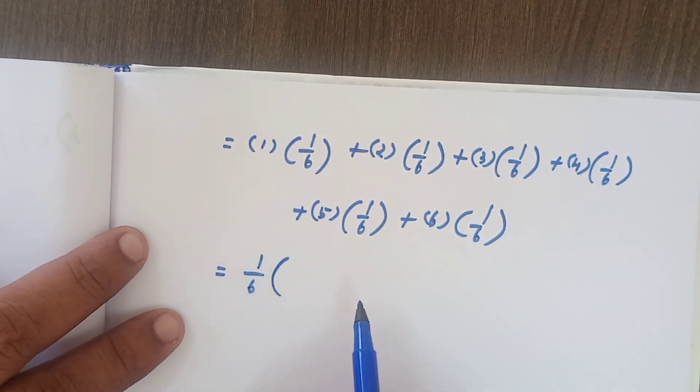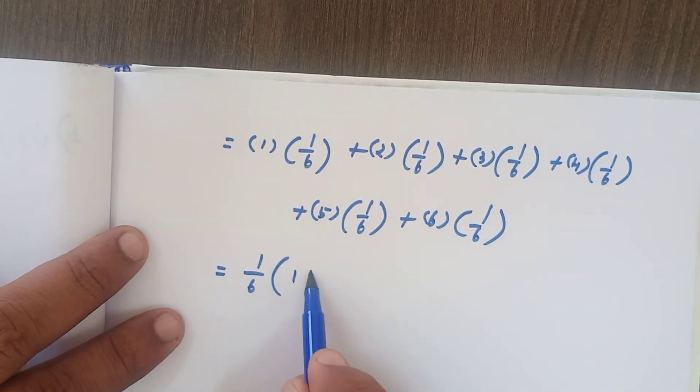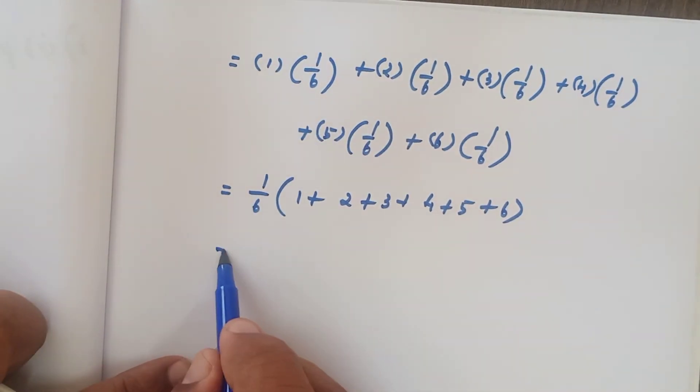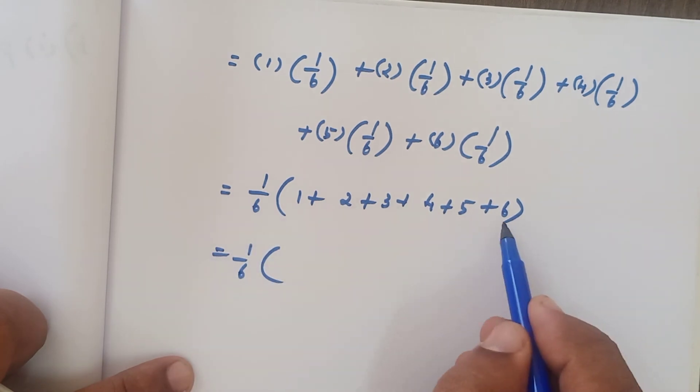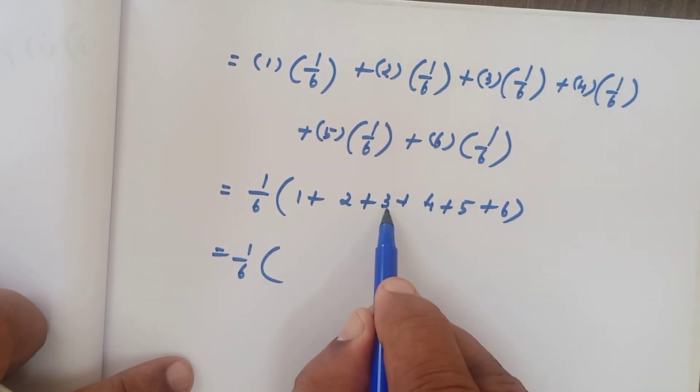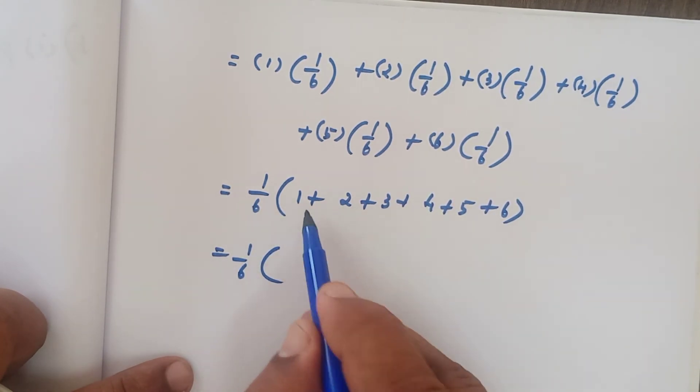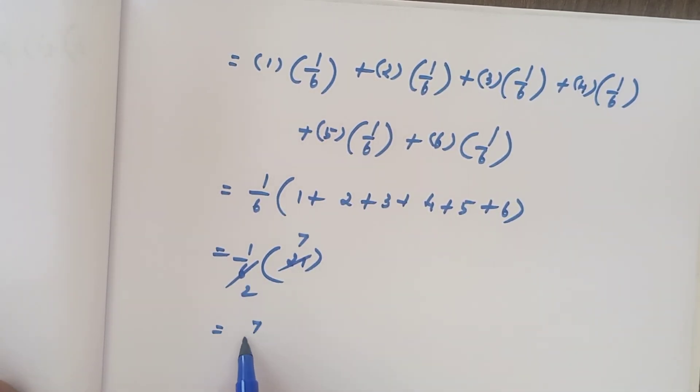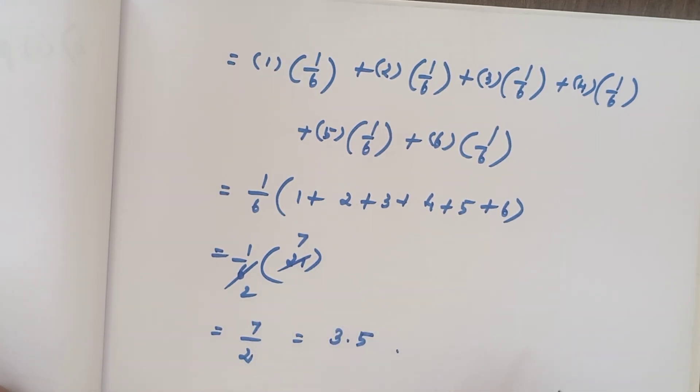Take 1 by 6 as common. If you take 1 by 6 as common, here 1 will be there, next 2, next 3, next 4, next 5, and next 6. That is equal to 1 by 6. If you add everything, 6 plus 5, 11 plus 4, 15 plus 3, 18 plus 2, 20 plus 1, 21. Can divide by 3, table 2 times 7. That is equal to 7 by 2, that is equal to 3.5.